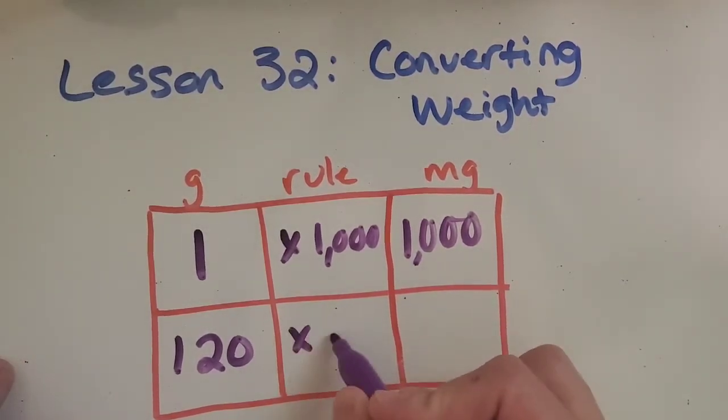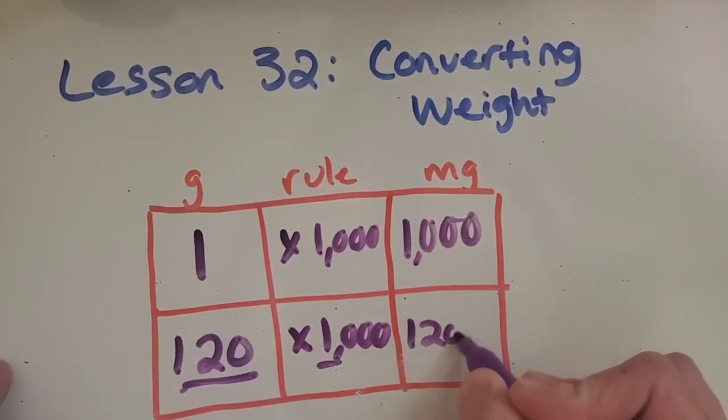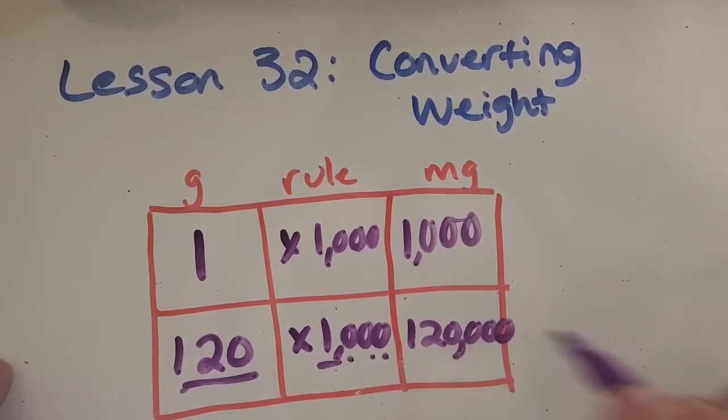So 120 times 1,000 we're going to do that same rule and I love the metric system because it makes it so easy to work with zeros like this because we know that 120 times 1 is 120 of course and then we just stick three zeros on the end. One, two, three and then put our comma in. So I got 120,000 milligrams.